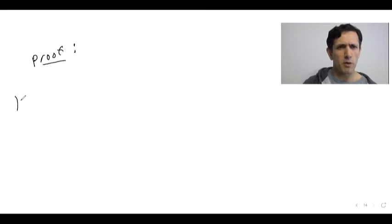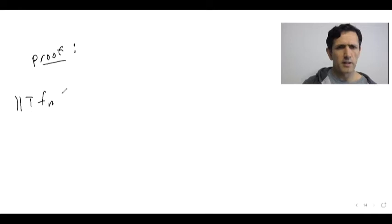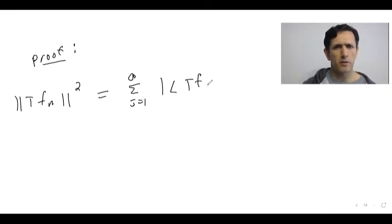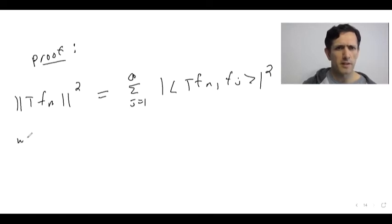So what's the proof? Let's use Parseval's theorem applied to TFN. We have two different orthonormal bases, En and Fn. I want to apply Parseval with respect to the orthonormal basis Fj. And let's do the same thing for TEn with respect to this orthonormal basis.